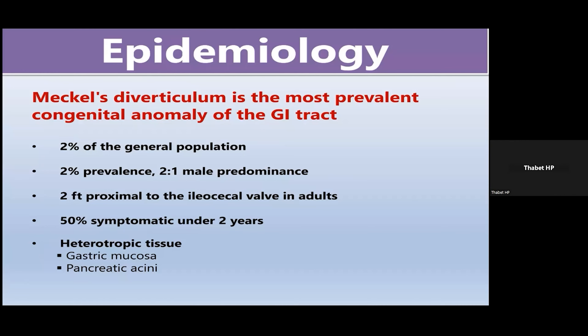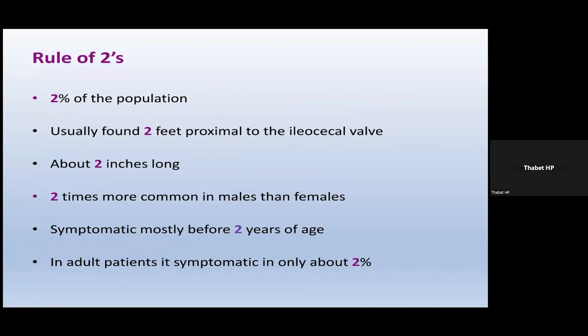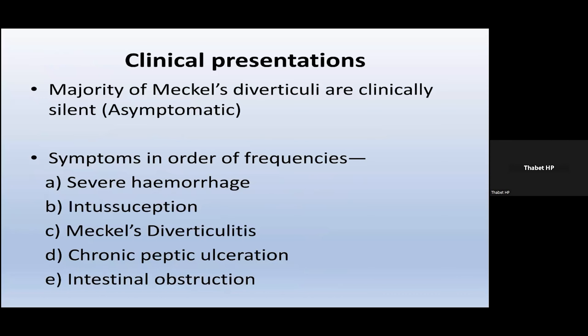In our patient, the location was consistent with the rule of two — about 40 cm proximal to the ileocecal junction. Fifty percent of patients are symptomatic, and most of them are children under two years of age. The majority of people with Meckel's diverticulum are clinically asymptomatic, but if they have symptoms, these vary from severe abdominal pain to just discomfort.